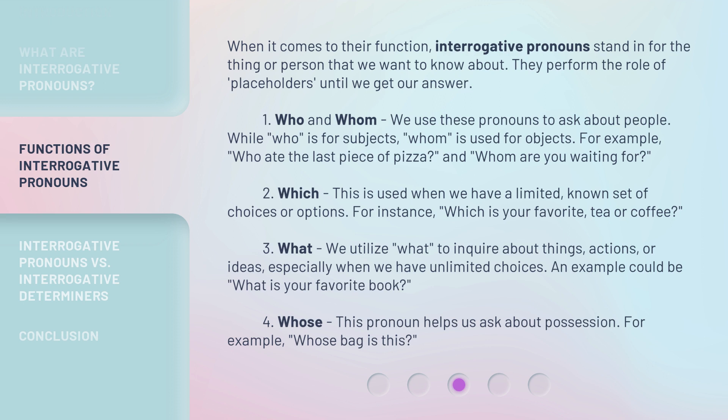1. Who and whom. We use these pronouns to ask about people. While 'who' is for subjects, 'whom' is used for objects. For example: 'Who ate the last piece of pizza?' and 'Whom are you waiting for?'